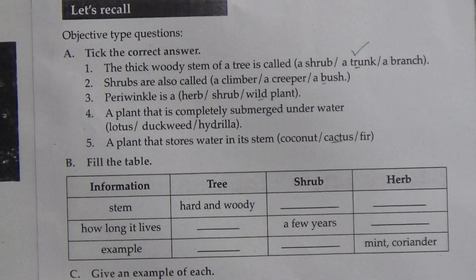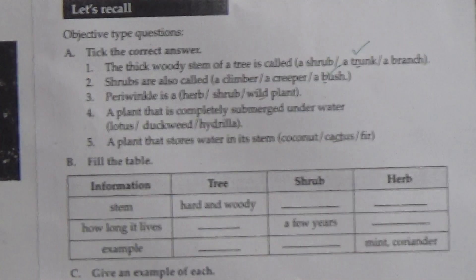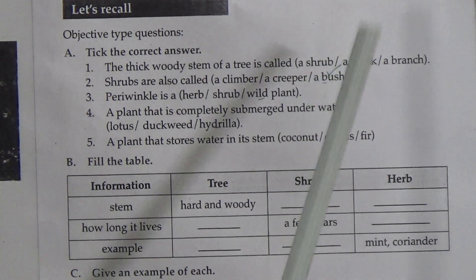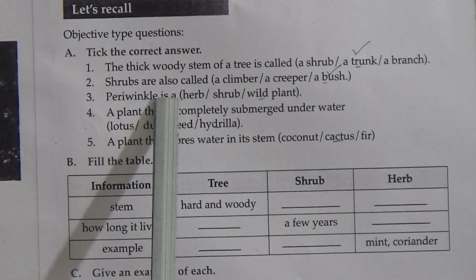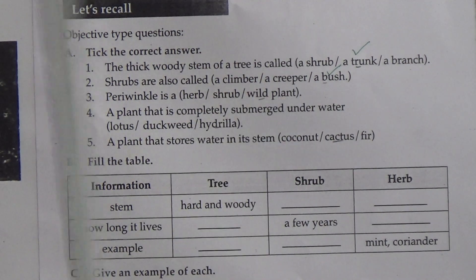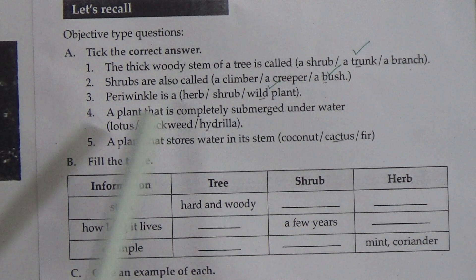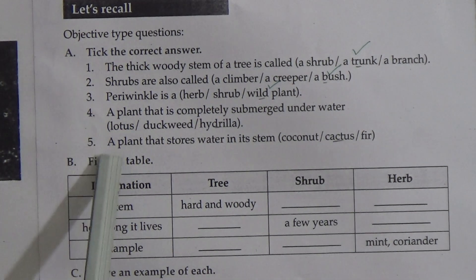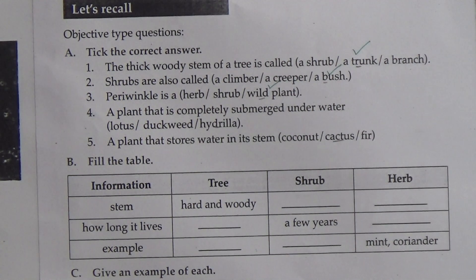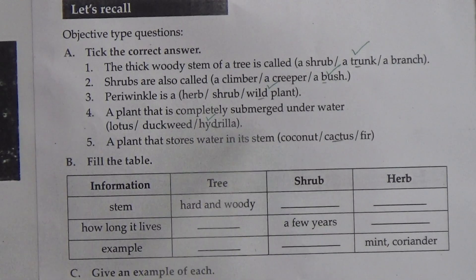Shrubs are also called a bush. Question three: periwinkle is a herb, shrub, or wild plant? The correct answer is wild plant, so we put a tick on wild plant. Question four: a plant that is completely submerged under water — lotus, duckweed, or hydrilla? The answer is hydrilla. Question five: a plant that stores water in its stem — coconut, cactus, or fir? The answer is cactus.